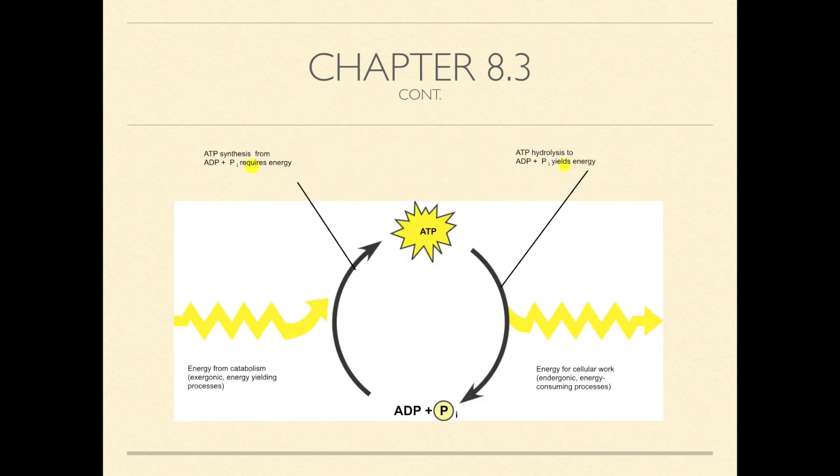ATP is regenerated by the addition of phosphate to ADP. The free energy required to phosphorylate ADP comes from energetic breakdown reactions in the cell. This shuttling of inorganic phosphate and energy is called the ATP cycle and it couples the cell's energy yielding processes to the energy consuming ones. The ATP cycle moves at an astonishing pace.